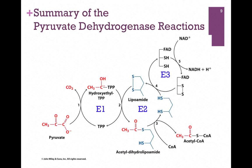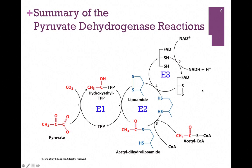Here's an overview of the process. E1's goal is to decarboxylate pyruvate and transfer it to the lipoamide group of E2. E2's job is to oxidize that to acetyl and transfer it to CoA. The job of E3 is to re-oxidize the lipoamide and pass those electrons to NAD+.